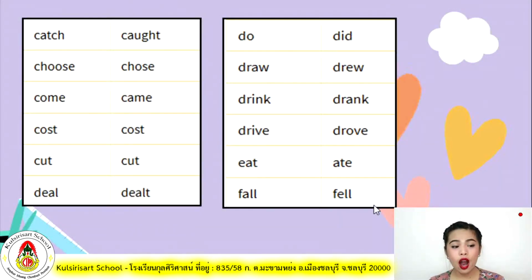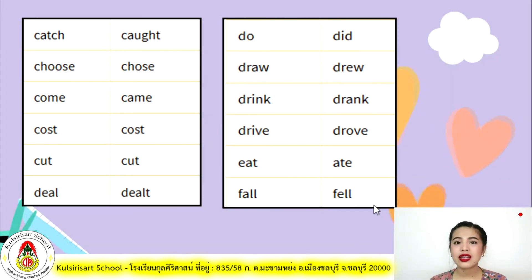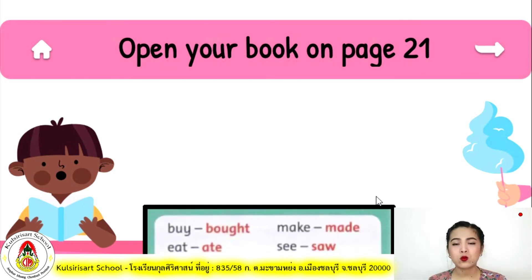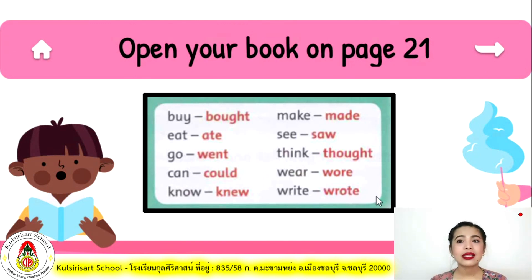More irregular verbs: catch/caught, choose/chose, come/came, cost/cost, cut/cut, deal/dealt, do/did, draw/drew, drink/drank, eat/ate, fall/fell. Now open your books on page 21 and repeat after me: buy/bought, eat/ate, go/went, can/could, know/knew, make/made, see/saw, think/thought, wear/wore, write/wrote.